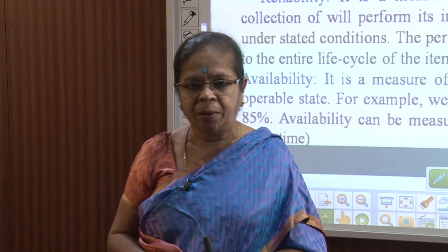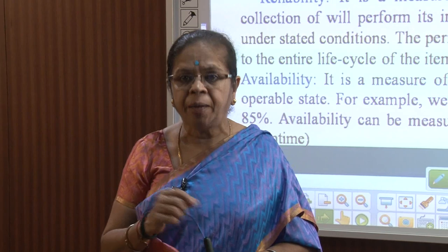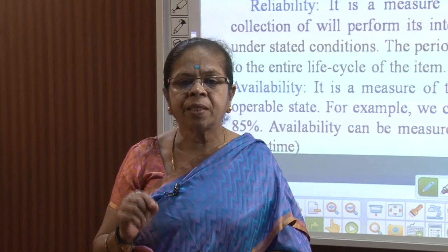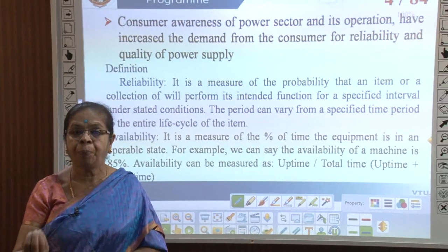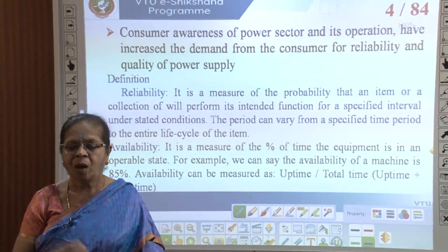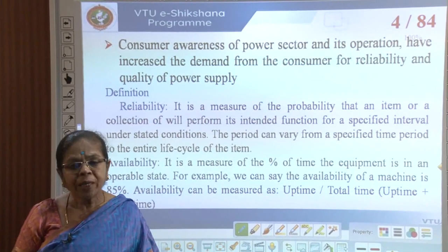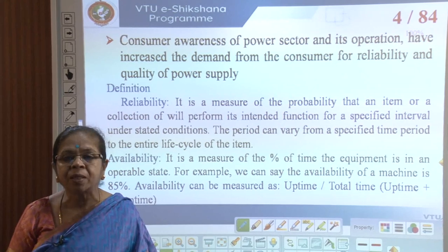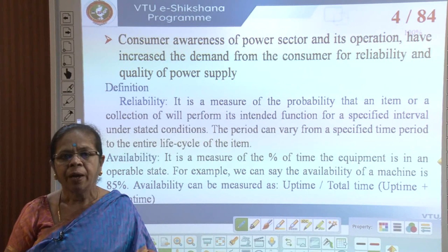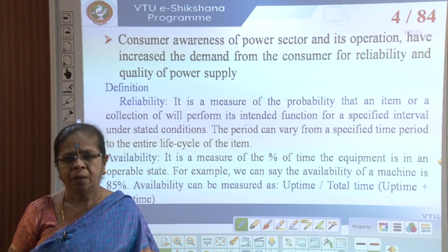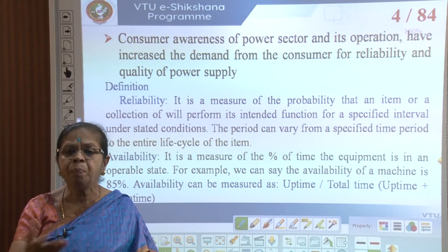Availability is a measure of the percentage of time the equipment is in an operable state — that is the uptime. For example, the availability of a machine at 85 percent means it is available 85 percent of the time and not available for 15 percent, which is not necessarily due to breakdown — it could be periodic maintenance.